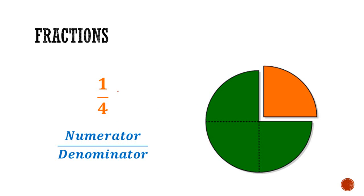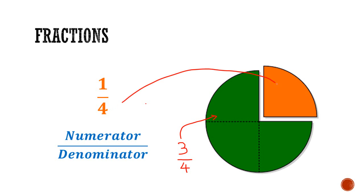We could also consider the part that's colored in green. The circle is divided into 4 equal parts so we draw a line. We have 4 below to represent how many parts the circle is divided into, and we have 3 parts of that 4 colored in green. So 3 over 4 represents the green part and 1 over 4 represents the orange.